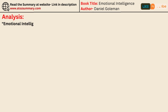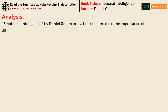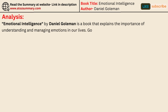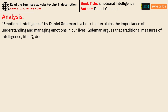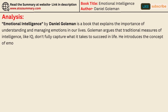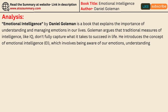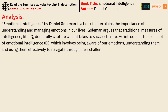Emotional Intelligence by Daniel Goleman is a book that explains the importance of understanding and managing emotions in our lives. Goleman argues that traditional measures of intelligence, like IQ, don't fully capture what it takes to succeed in life. He introduces the concept of emotional intelligence, EI, which involves being aware of our emotions, understanding them, and using them effectively to navigate through life's challenges.